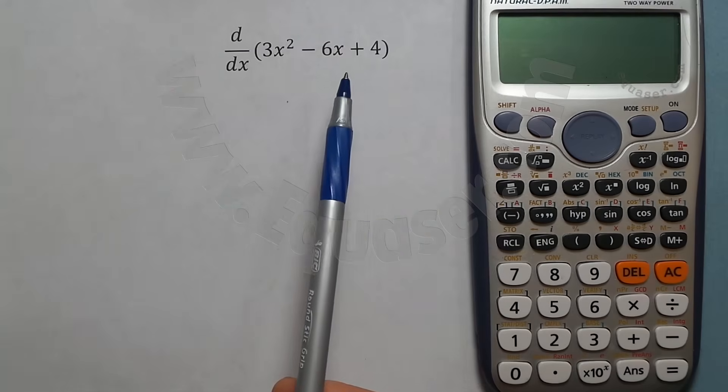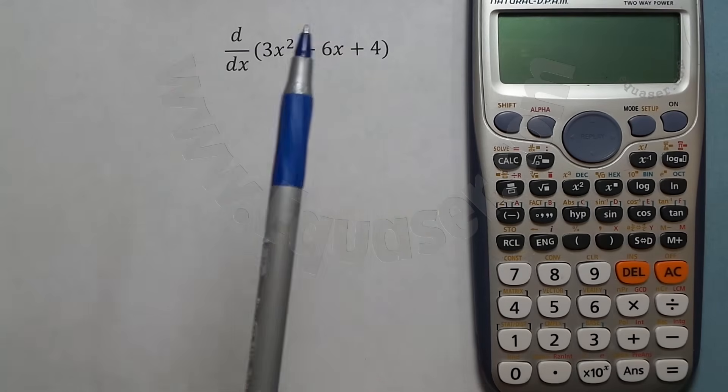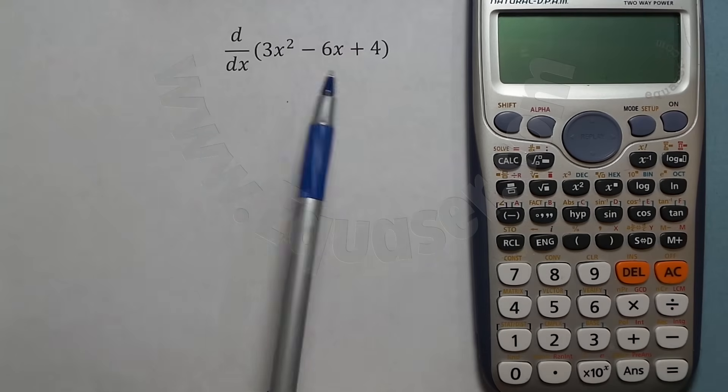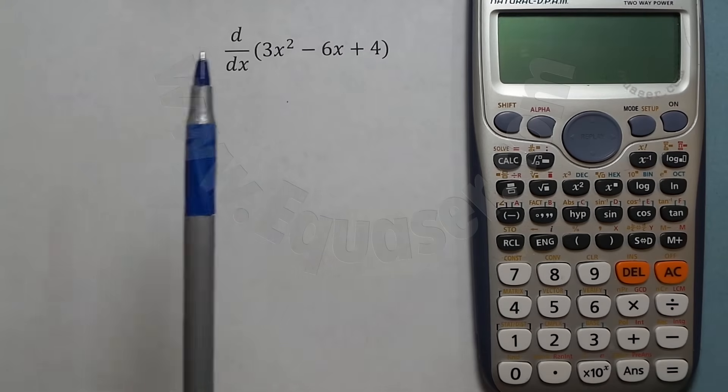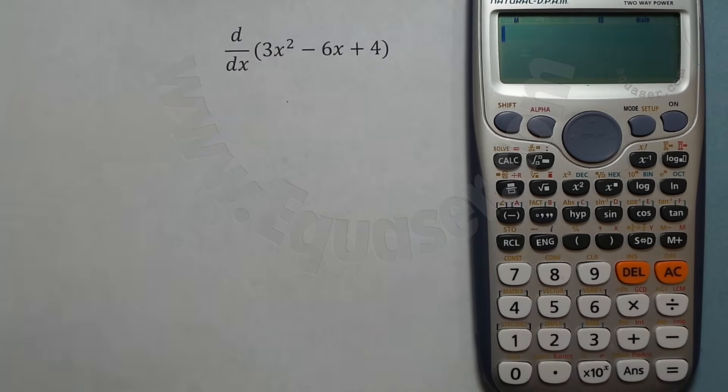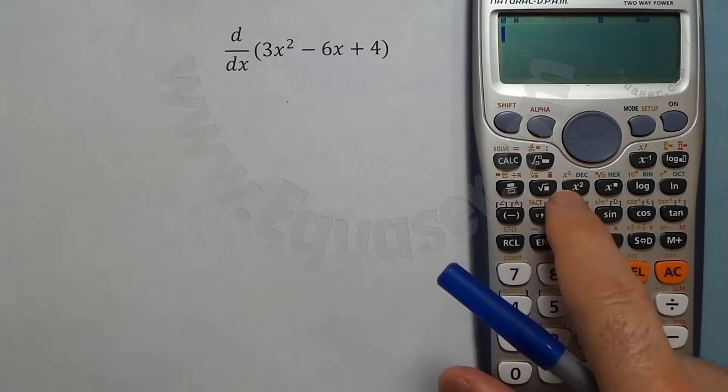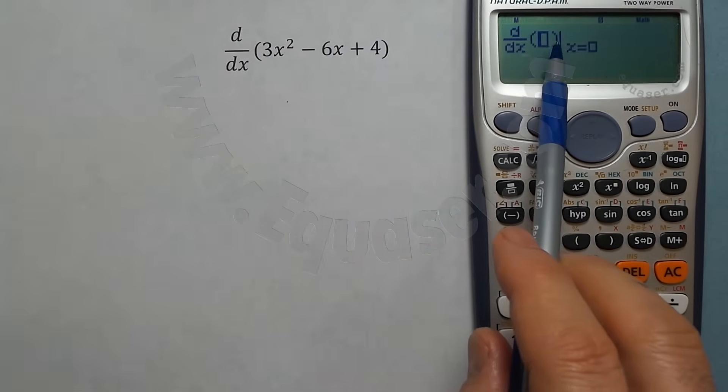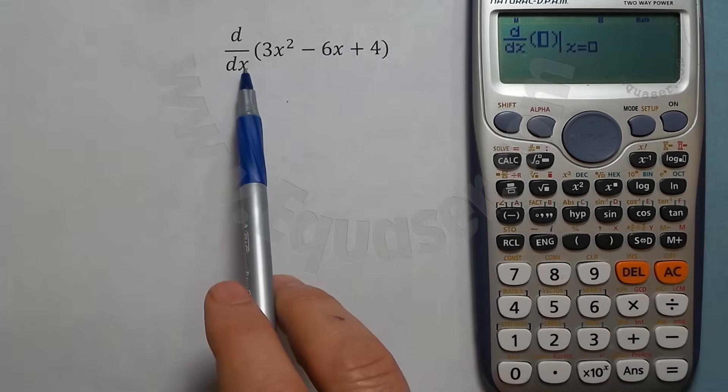So what you do is you take the derivative and then evaluate the derivative at two seconds, or at two. This calculator can take the derivative and evaluate it at the same time. Let's do it. To do the derivative, or to access it, we press this button by pressing shift. Now this is d of our function with respect to x.